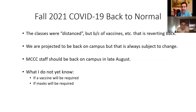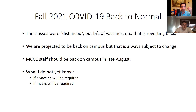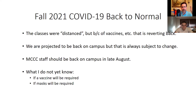The classes previously were distanced — not quote-unquote online, because an online class you do on your own time. We would still meet at the normal times, and if they kick us back to distanced we'll still meet at those times, just like this instead of in class. We're projected back on campus but this is always subject to change. There's a lot of talk about the delta variant. MC staff are saying should be back in mid to late August — maybe around August 16th or 20th.